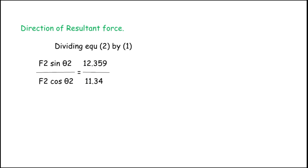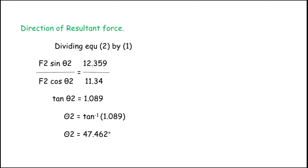Since sin/cos = tan, we get tan θ2 = 1.089. Transferring tan to the right side: θ2 = tan⁻¹(1.089), which gives θ2 = 47.462°.